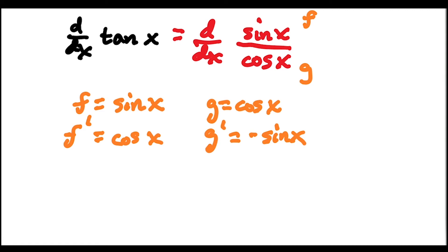And then from here I'm going to use the quotient rule formula and it's gf prime. So you're going to end up with cosine squared x minus f g prime, which is going to be negative sine squared x. And we're going to divide this all by g squared, which is cosine squared x.